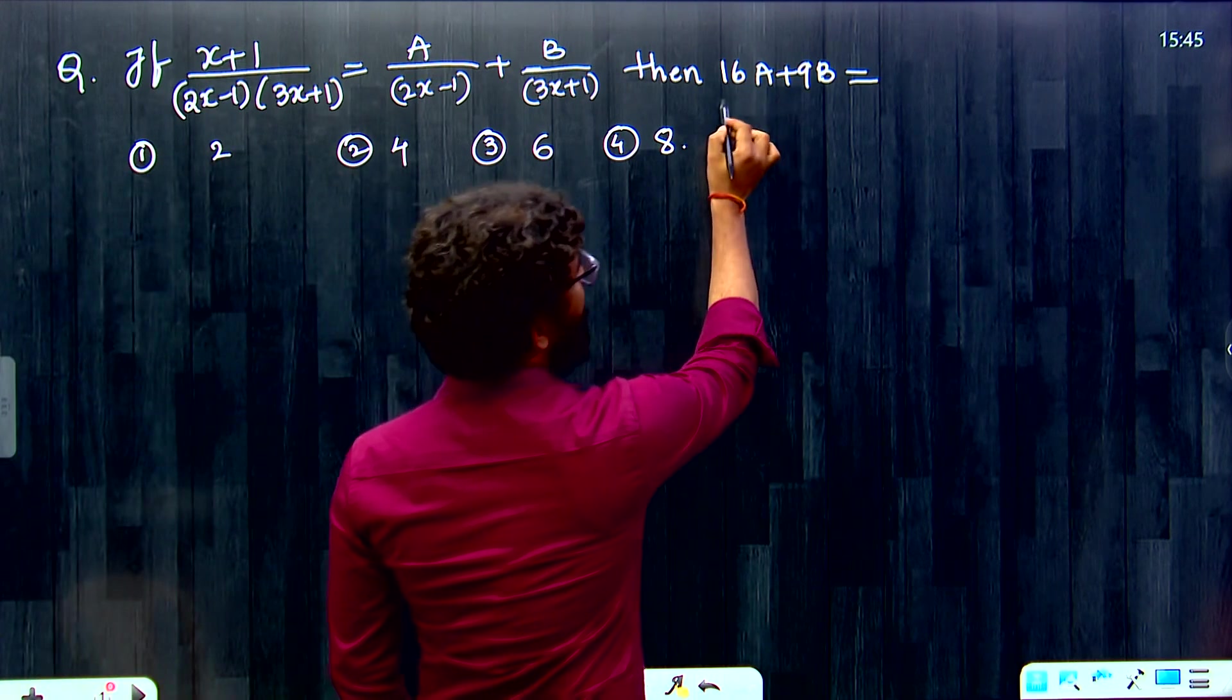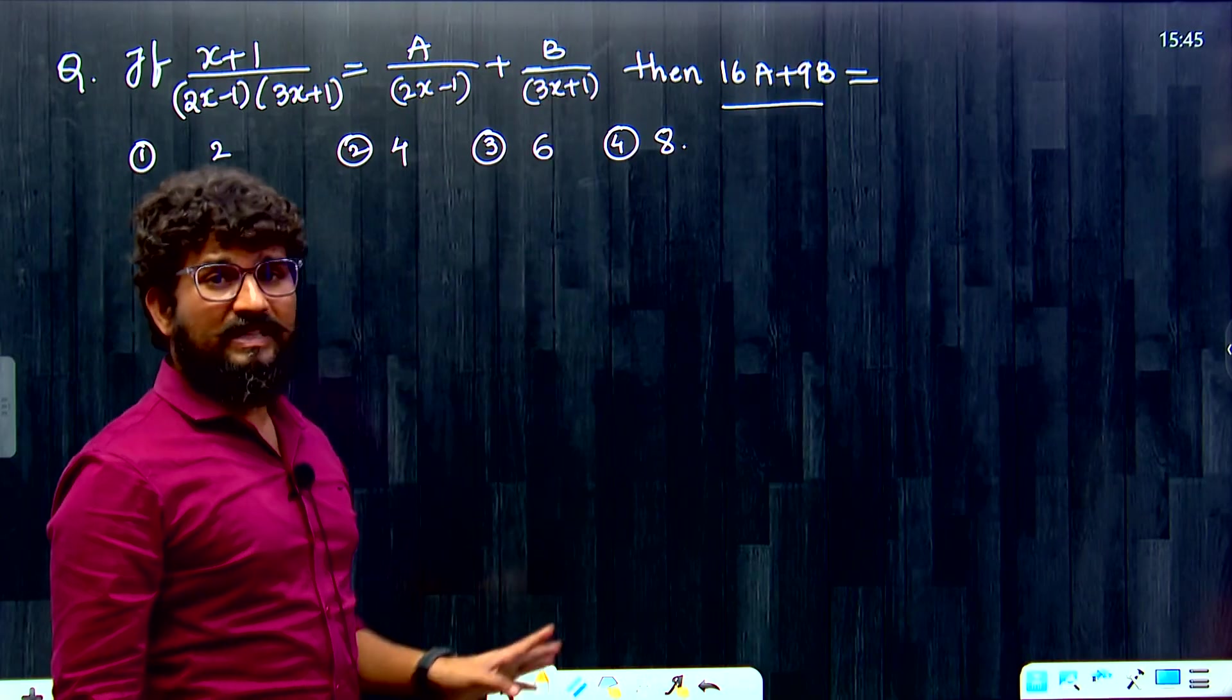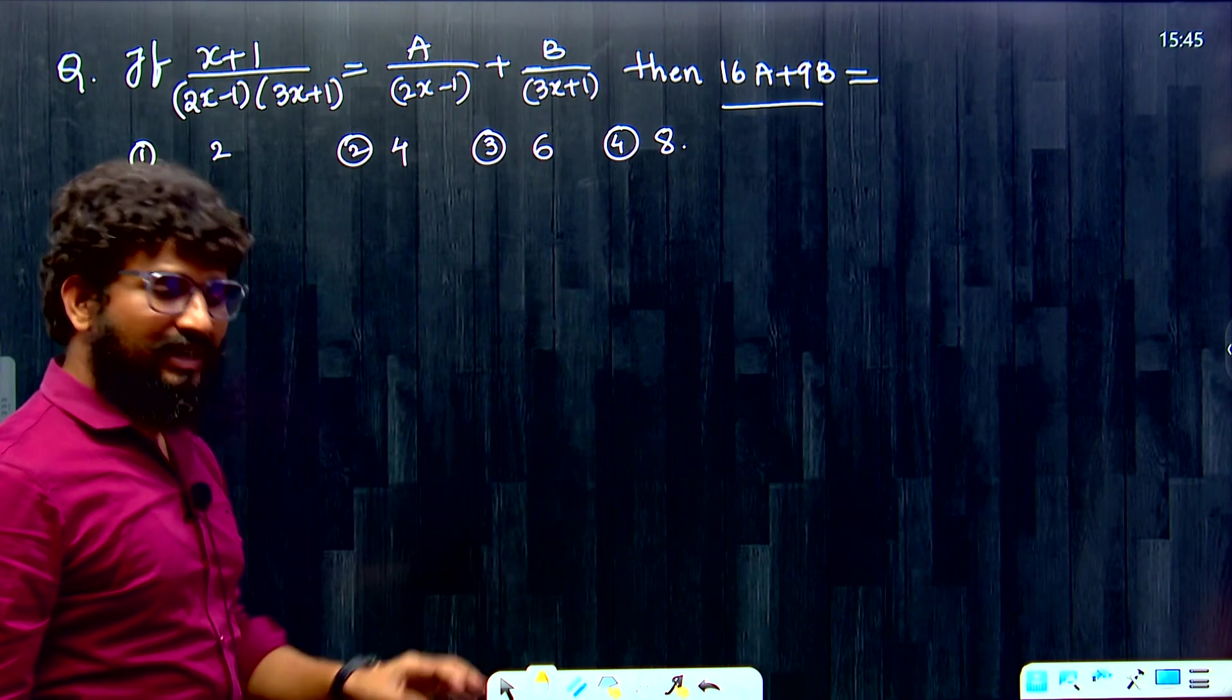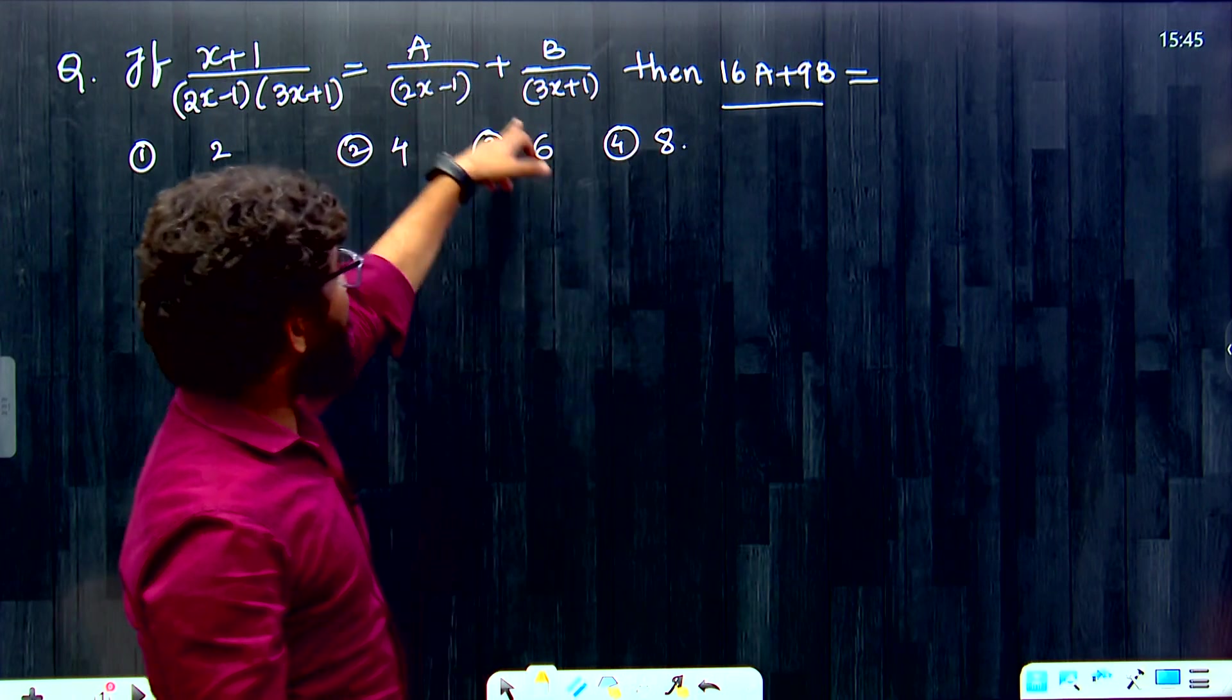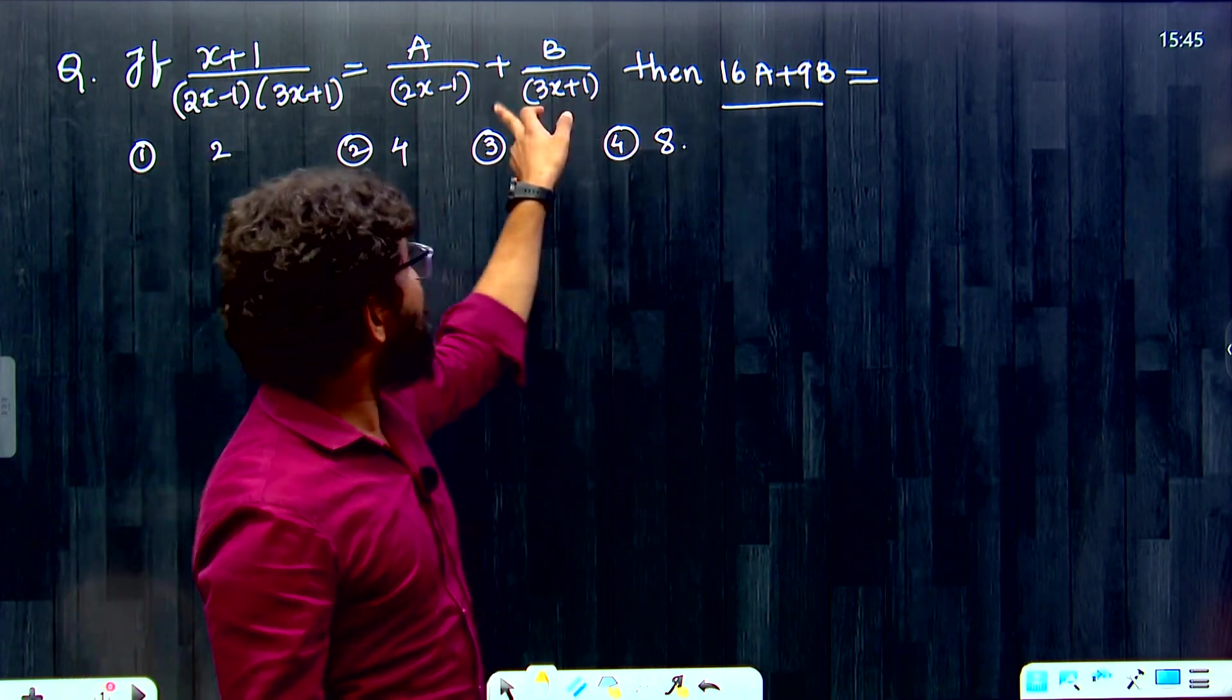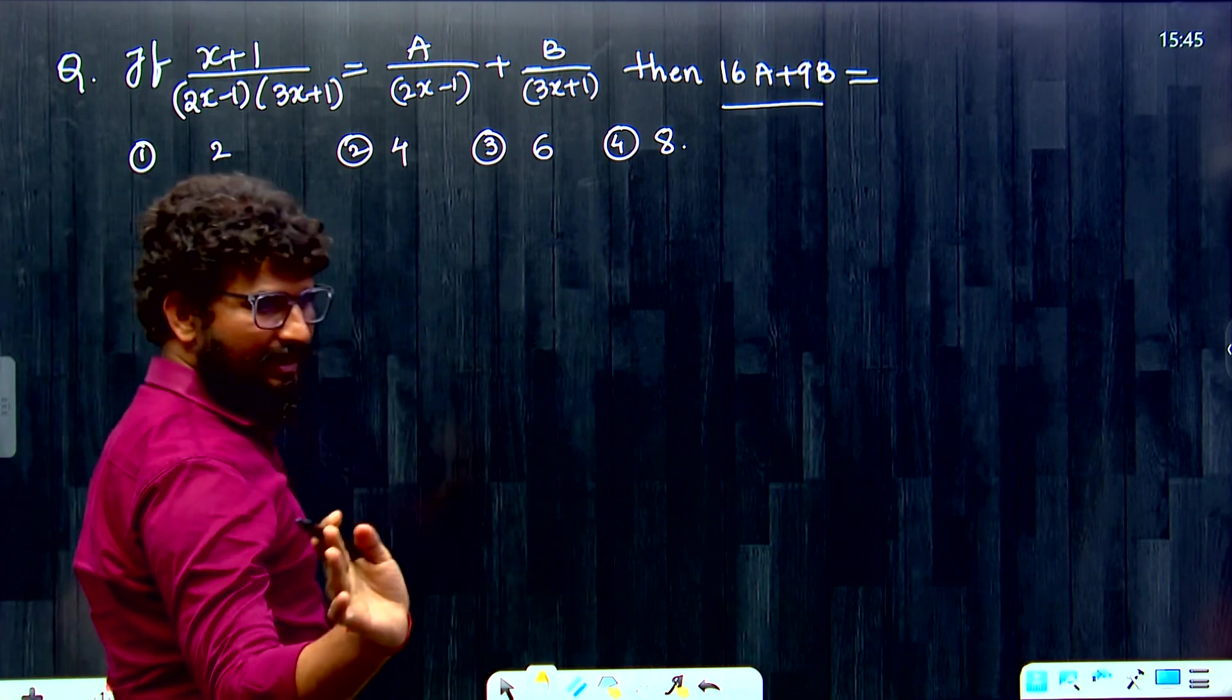So here the requirement is to find 16A plus 9B. Using the LCM method, we have A next to 3X plus 1 and B next to 2X minus 1. And there is a logic: 3X plus 1 and 2X minus 1. And next to A the value is 16 and next to B the value is 9.